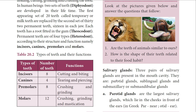Do all animals have teeth similar to ours? No — they differ in every way. The shape, size, and number of teeth differ according to their food habits. If they are flesh-eating animals, they will have long canine teeth for tearing flesh.